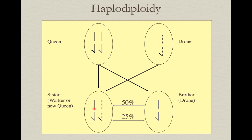The only potential genes that can be shared between a sister and a brother come from mom. In this case, one of the four chromosomes is shared between them — so from the female's perspective, that's 25% relatedness. But that same chromosome represents 50% of the brother's DNA, because he only has half the amount of DNA. That's why brothers are related to sisters by 50%, while sisters are related to brothers by only 25%.